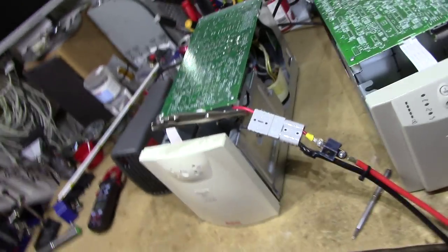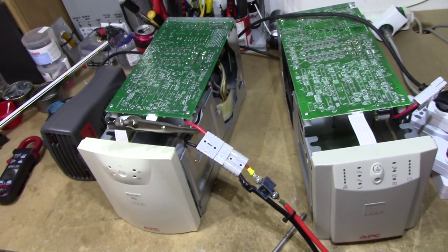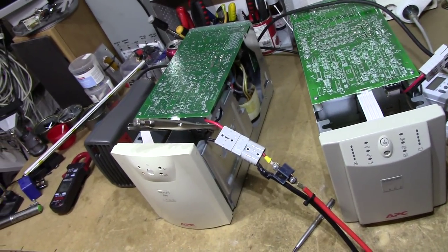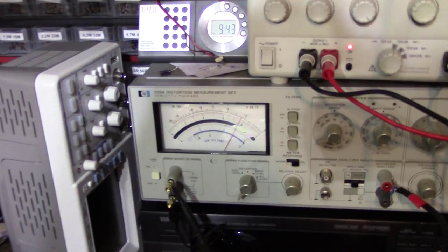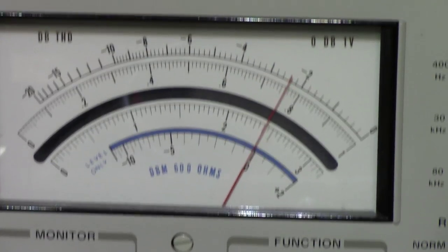Now, the curious thing about it is that it seems to somehow upset the feedback system on the UPS. Because when I turn on the load, if we switch to our analog true RMS voltmeter here, you will notice it's set to a far too high voltage at about 240.